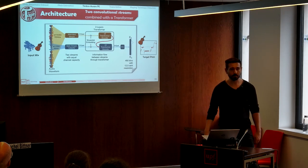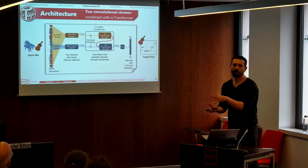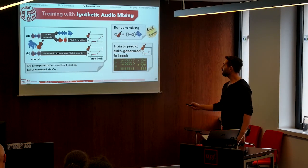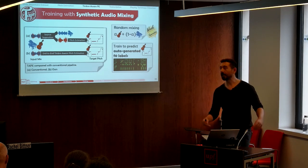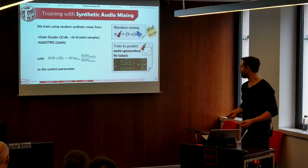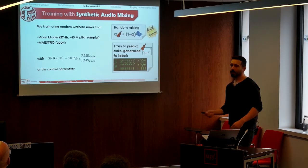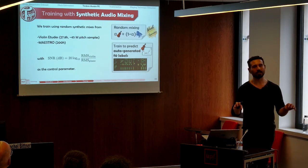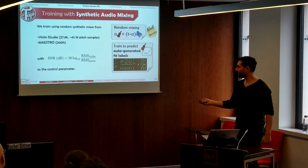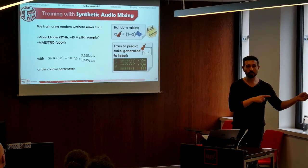The convolutional streams come from the CREPE pitch estimator, followed by transformer modules for information flow, then estimating the violin pitch. The most important part is training with synthetic audio mixes — random mixes, the cacophony — for training. For each sample of the batch, we apply different SNR levels by mixing violin and piano stems, and train for predicting the violin pitch, using SNR as the control parameter throughout our experiments. The F0 labels used are automatically generated from the previous chapter. Using this paradigm, we tested on real datasets disjoint from our training sets: real violin piano recordings from MusicNet and MedleyDB datasets.